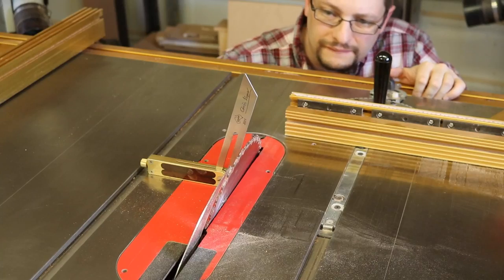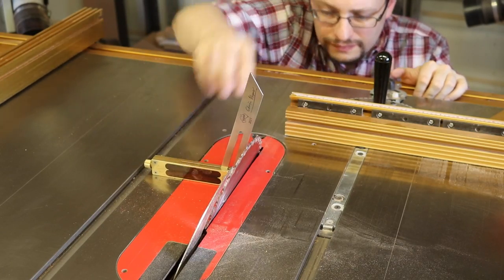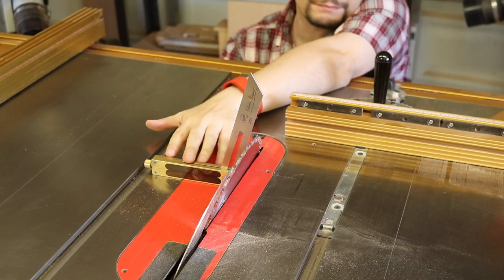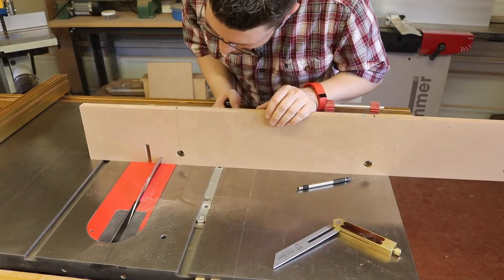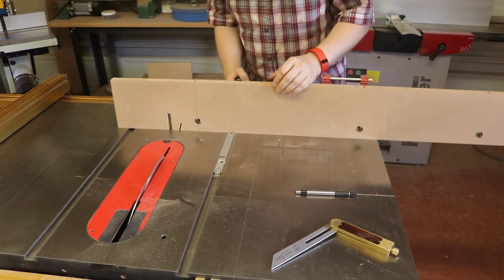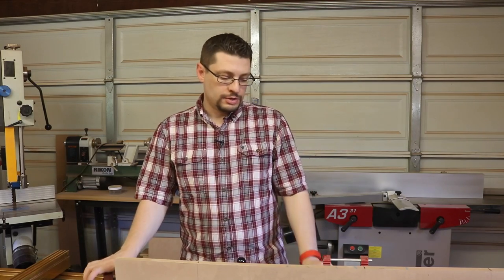And then over the table saw with my bevel gauge set at 16 degrees, I made sure my blade was at 16 degrees. I attached a sub-fence to my miter gauge and made one initial cut so I knew where everything starts. And that's where I am now.